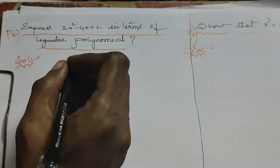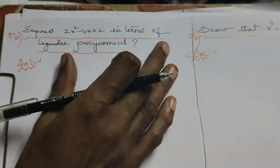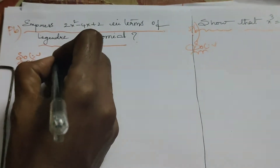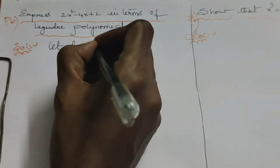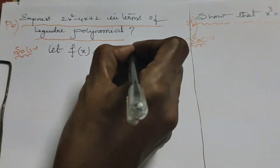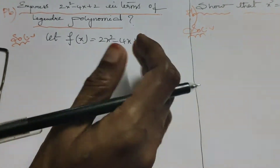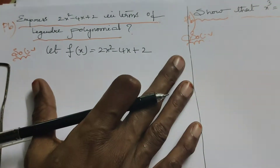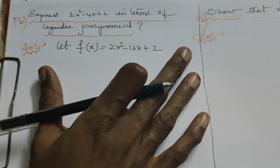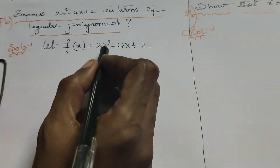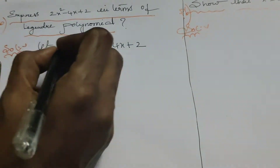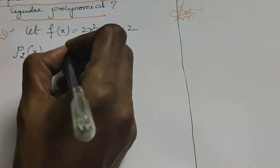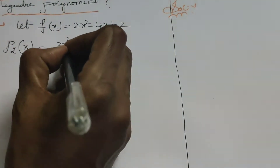In this given function, we find the solution using Legendre polynomial. Let us assume that f(x) equals 2x squared minus 4x plus 2. We use the second-degree Legendre polynomial because the given problem starts from a second-degree equation. The second-degree Legendre polynomial is P2(x) = (3x² - 1) / 2.